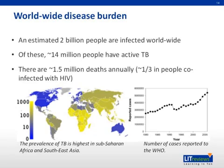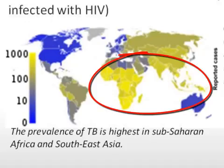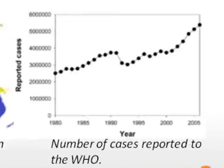Worldwide, an estimated 2 billion people are infected with tuberculosis. Of these, 14 million people have active TB with symptoms. Approximately 1.5 million deaths occur each year from TB, and roughly a third of these are co-infected with HIV. The graph on the left depicts the prevalence of TB in different countries — highest in the bright yellow areas including Sub-Saharan Africa and Southeast Asia. The graph on the right shows reported cases per year to the World Health Organization, demonstrating that the incidence of new cases each year is still on the rise.